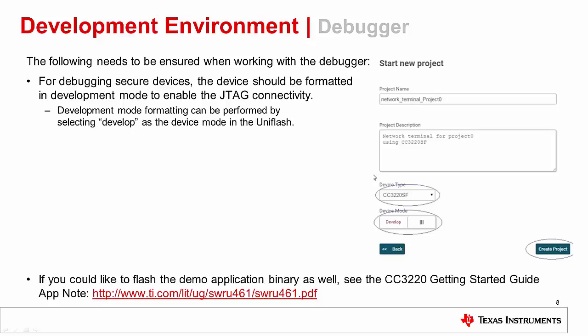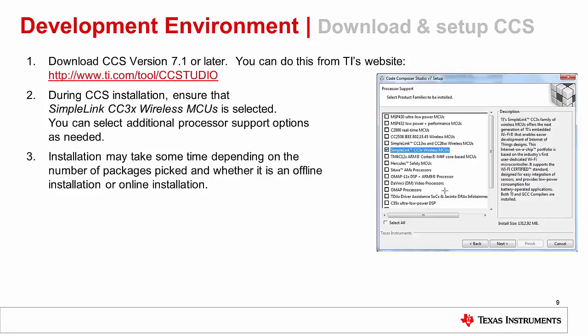Let's move on to the download and installation of IDEs. Download CCS version 7.1 or later from TI's website. When running the installer, please use the default directory of C:/TI to follow along with this video and other trainings. During the installation process, when you are prompted to select the processor support, select SimpleLink CC3X Wireless MCUs. You can select additional options as needed. Click Next, be sure that TI-XDS Debug Probe Support is already selected, and proceed with the installation. Please note that the installation may take a while to complete depending on the number of selections and your network speed.